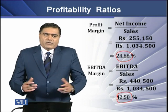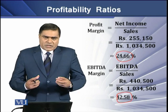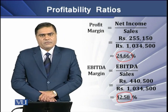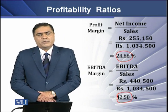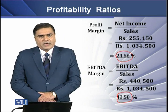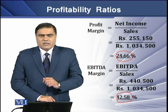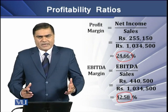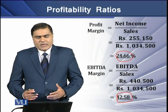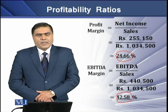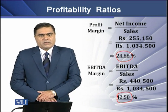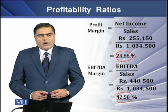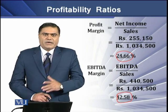We can say that the cash operating profit of the firm is 42.58% of net sales of the firm for a certain period of time. یہ ratio ایک اچھا تاثر دے رہی ہے کہ firm نے اپنی sales کے آلموسٹ ساڑھے بیالیس فیصد کے برابر آپریٹنگ کیش پروفٹ جنریٹ کیا ہے.